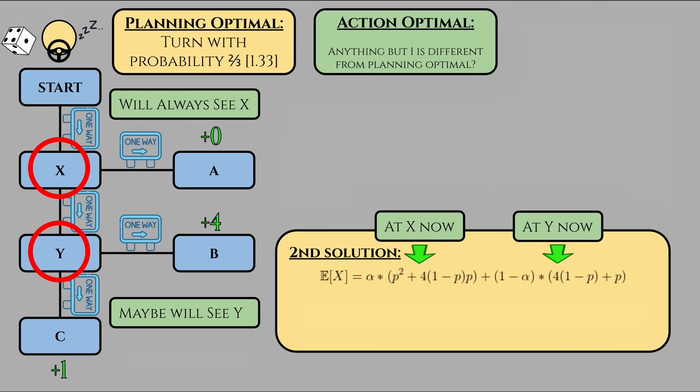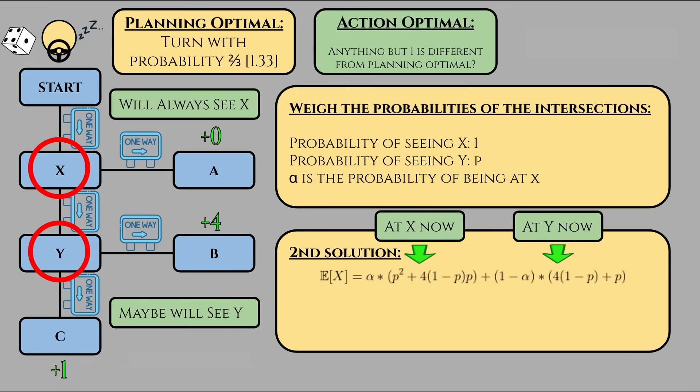How can Dave's in-the-moment decision-making process change from his original planning optimal approach if all he does is pull up to an intersection without actually knowing what intersection he's at? Many people, including Piccione and Rubinstein, said that we should account for the possibility of being at both intersections, which seems like a reasonable thing to do at first. After all, we're guaranteed to at least run across the first intersection, and we have a P probability of seeing the second.